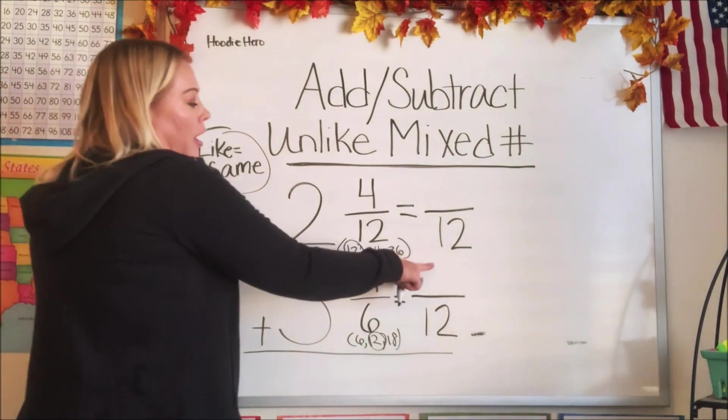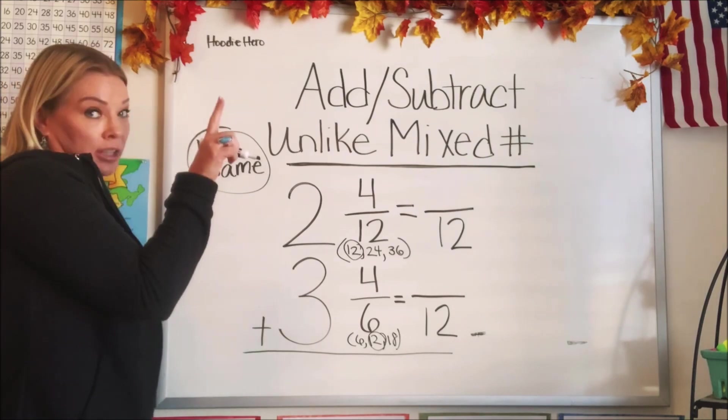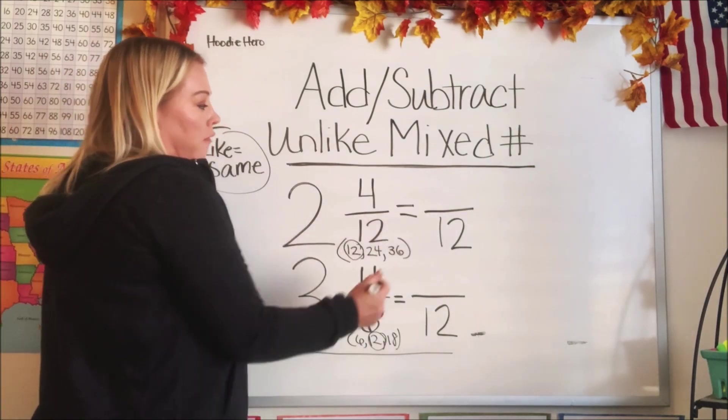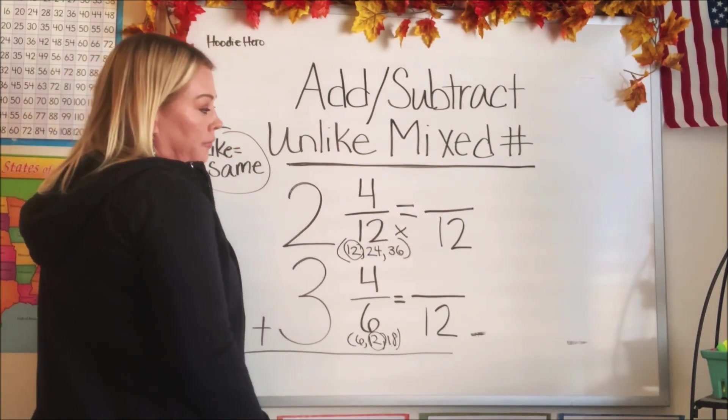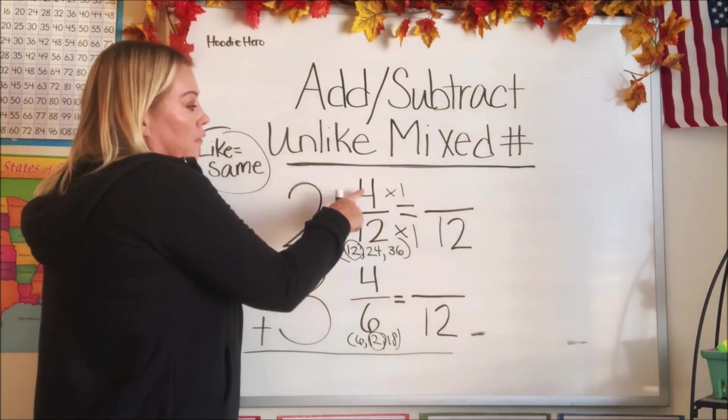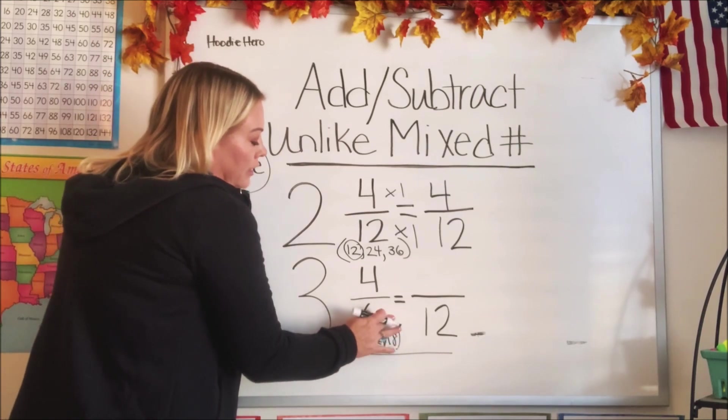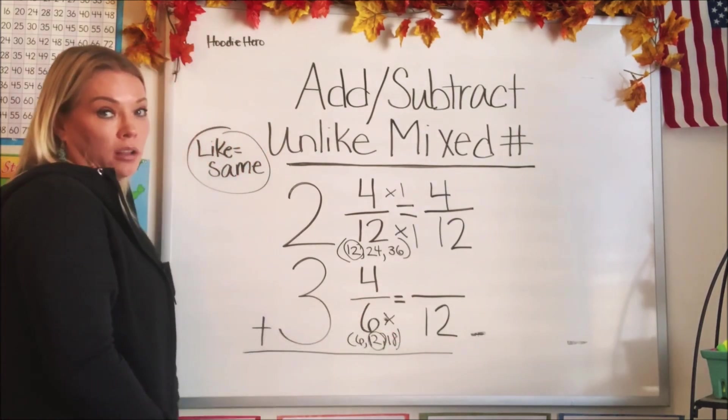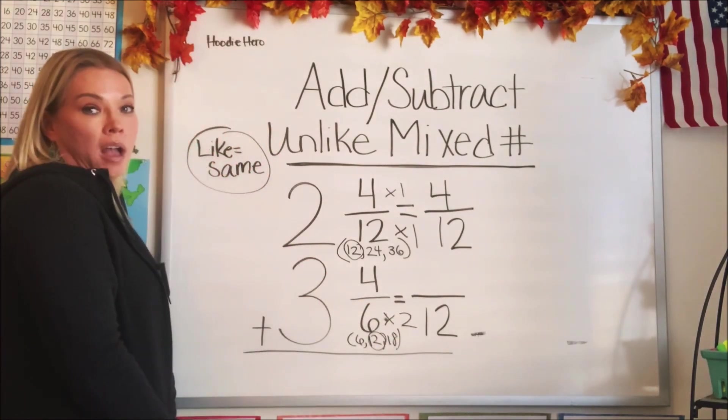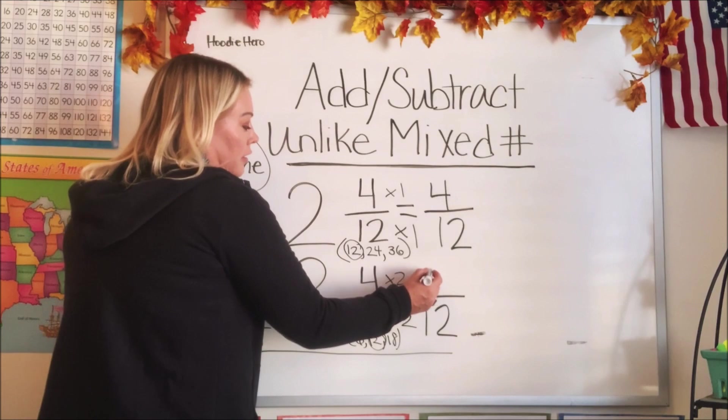Now we need to figure out what our new numerators are. So what we do to the bottom, we have to do to the top. Remember, that's the rule for fractions when you're computing. What you do to the bottom or the denominator, you have to do to the top or the numerator. So how did we get from 12 to 12? What did we multiply that by? We multiplied it by 1. So we have to do it to the top. 4 times 1 is 4. Let's do the same thing down here. What did we multiply 6 by in order to get to 12? 2. 6 times 2 is 12. Let's go ahead and do it to the top number or the numerator. 4 times 2 is 8.